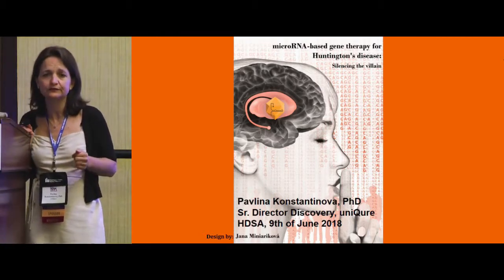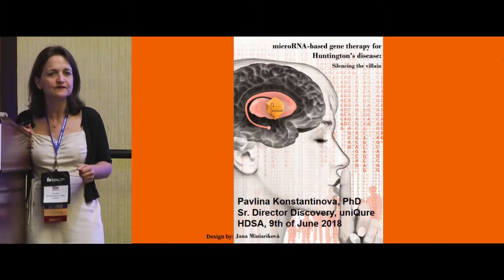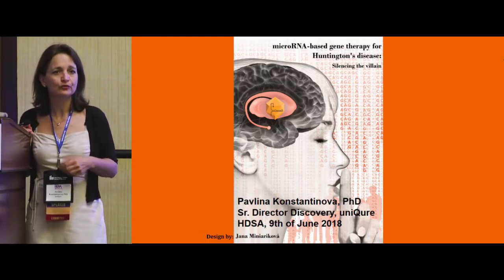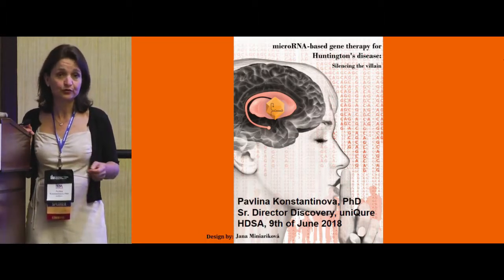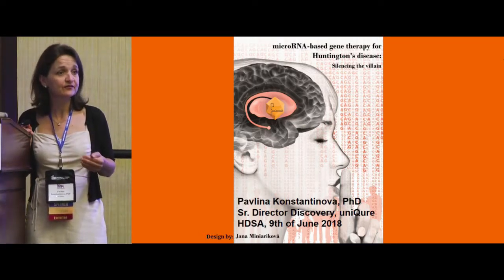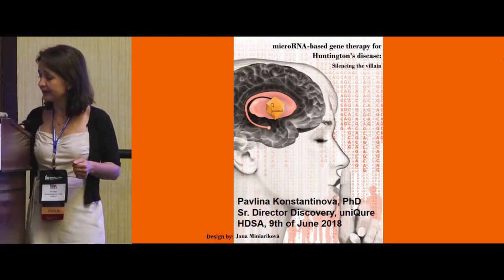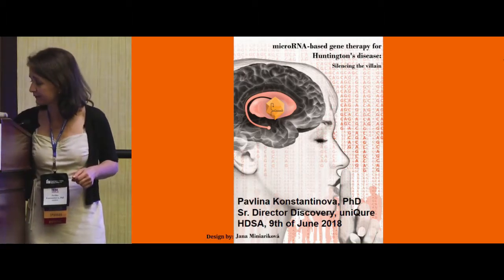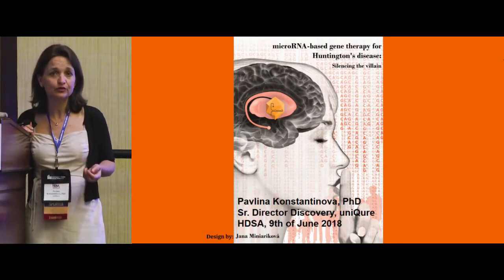In summary, we have designed AMT-130, our therapy for Huntington's disease. We have an extensive preclinical package looking at rodent models, transgenic pigs, and non-human primates, including GLP tox studies. We were able to show lowering of Huntington in the CSF of transgenic pigs, which is good news for developing biomarkers. We are preparing our IND with the goal of starting a clinical trial next year. I'd like to acknowledge the huge collaborative effort — especially Melvin Effers, who has been driving the project for the last two and a half years, and Harald Petri and Sander van Deventer.